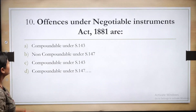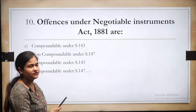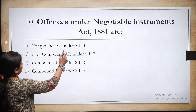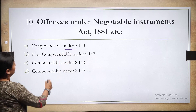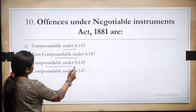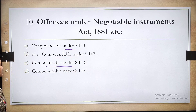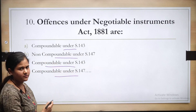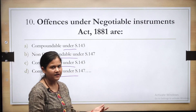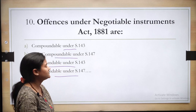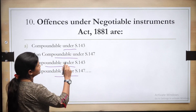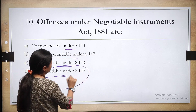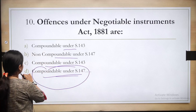Tenth question: Offenses under the Negotiable Instruments Act are — option A: compoundable under section 143, option B: non-compoundable under section 143, option C: compoundable under section 143, option D: compoundable under section 147. All offenses under the Negotiable Instruments Act, notwithstanding anything contained in the CrPC or any other law, are compoundable under section 147. Hence the correct answer is option D.